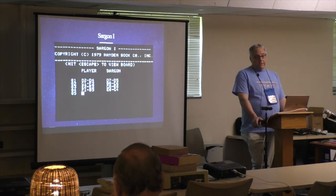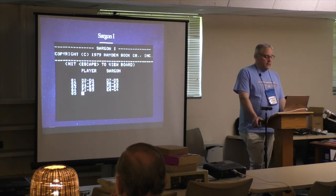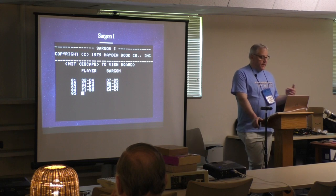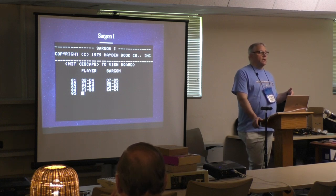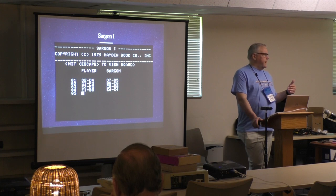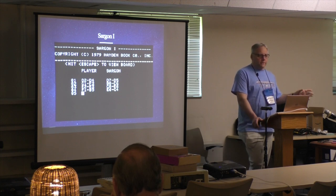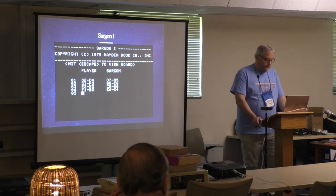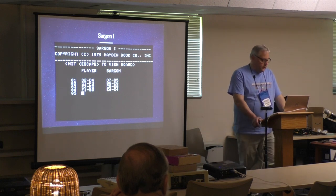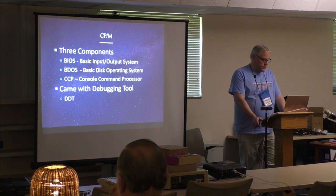This is what the Sargon 2 chess game actually looked like — it was text-based. You used Escape to view the board, so on the Apple II you could actually view the graphics on the board. Some of the other ones, like Jupiter 3, didn't have any graphics — there was only a text version of it.